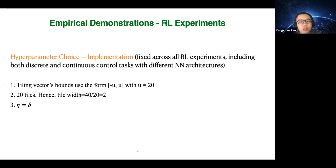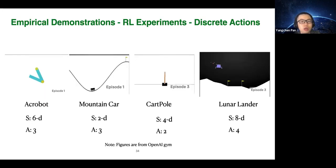We fixed the same hyperparameters for FTA across all RL experiments. We show experiments on four discrete action domains: Acrobot, Mountain Car, Cartpole, and Lunar Lander. The first three are relatively simple tasks, while Lunar Lander is more challenging. We also show the state dimension and number of available actions for each domain.